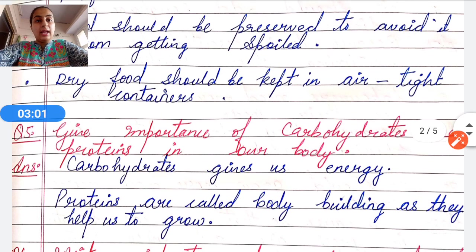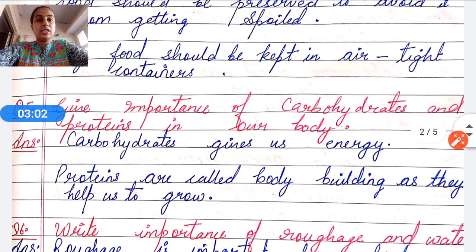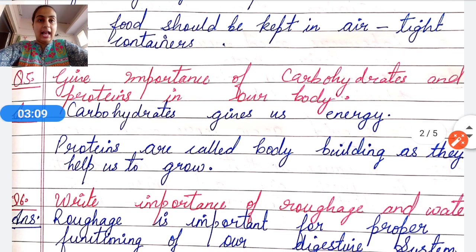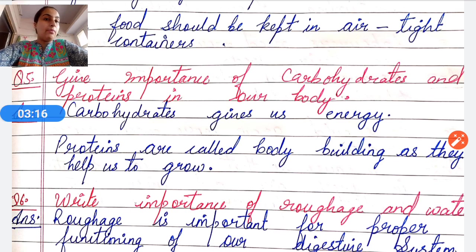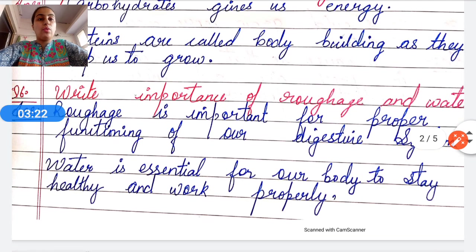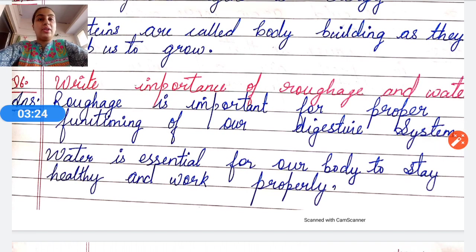Question number five: Give the importance of carbohydrates and proteins in the body. Carbohydrates give us energy. Proteins are called body-building foods because they help us to grow.